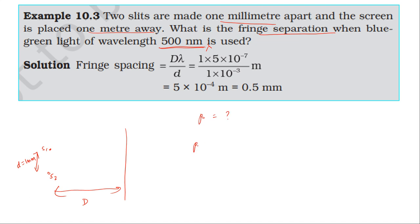Fringe separation formula: distance between slits and screen times wavelength divided by distance between the slits. Capital D is one meter.